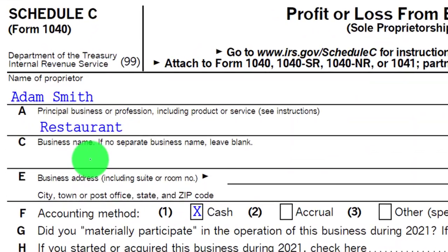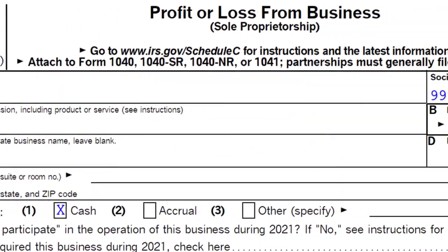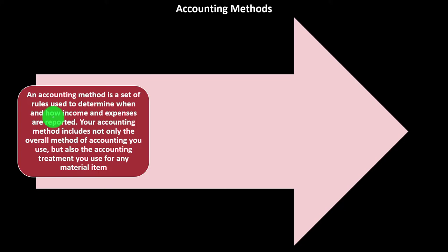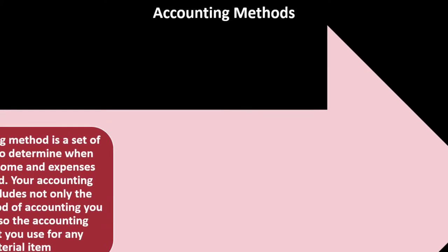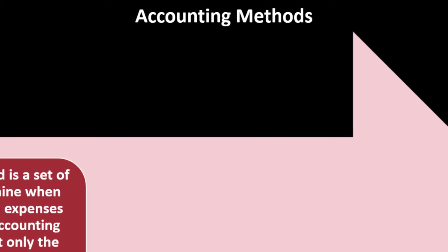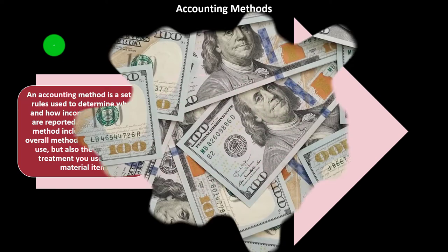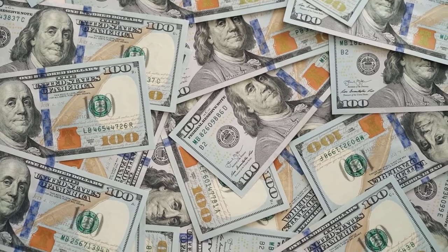Here is the Schedule C — Profit or Loss from Business — basically an income statement. Now thinking about Accounting Methods more specifically: from an accounting standpoint, the two methods that come to mind are the Cash Method and the Accrual Method.